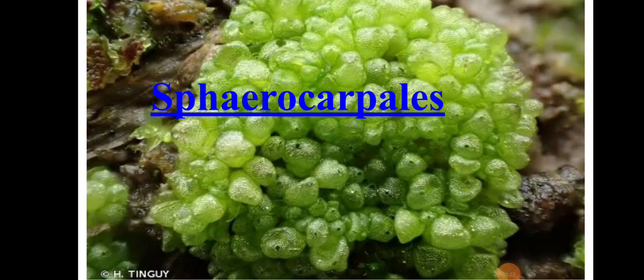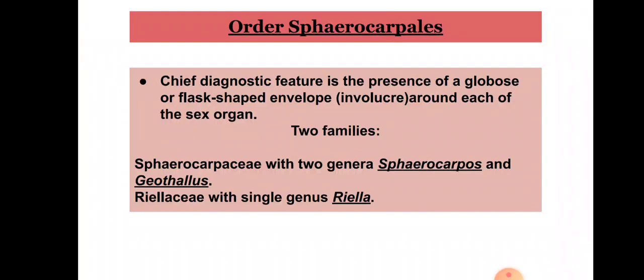Welcome to this video lecture. Today I will teach you about the order Sphaerocarpiales, which belongs to class Hepaticopsida. The chief diagnostic feature of this order is the presence of a globose or flask-shaped envelope or involucre around each of the sex organs. The reproductive organs present on the thallus are enclosed in these globose or flask-shaped structures called involucres. There are two families in this order: Sphaerocarpaceae and Riellaceae.